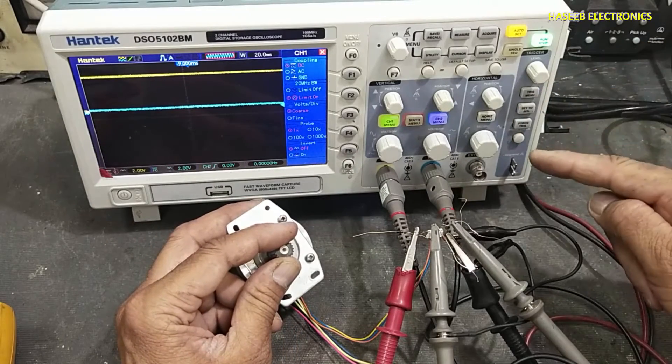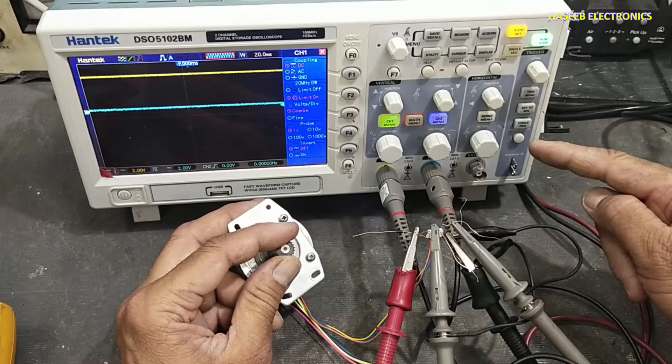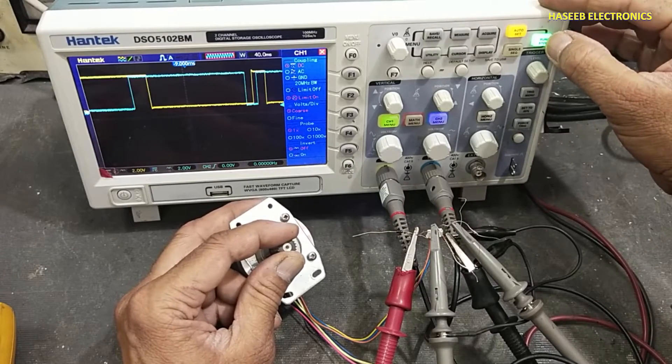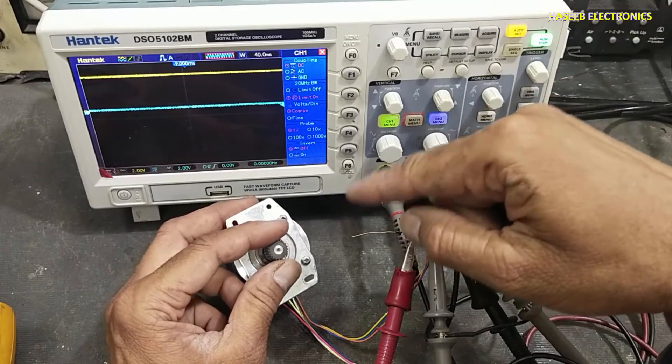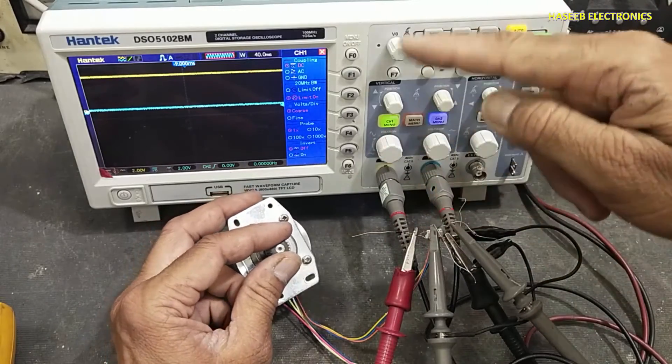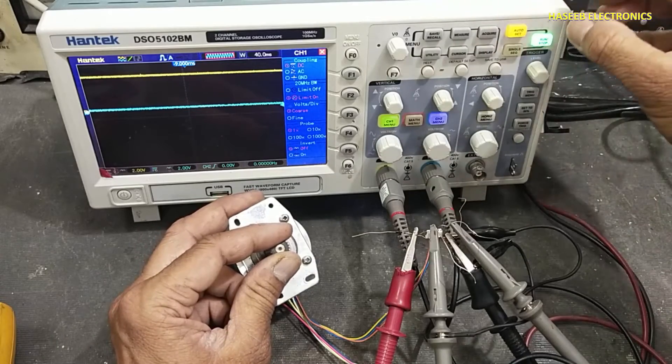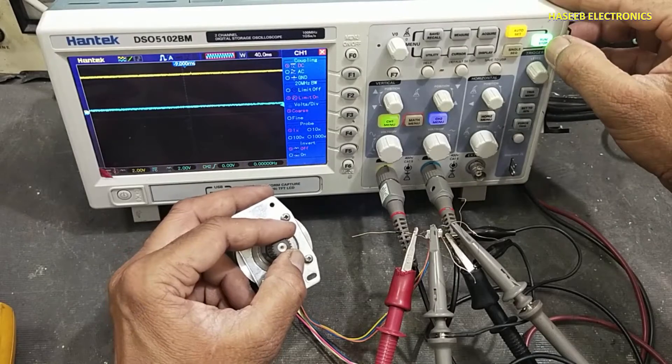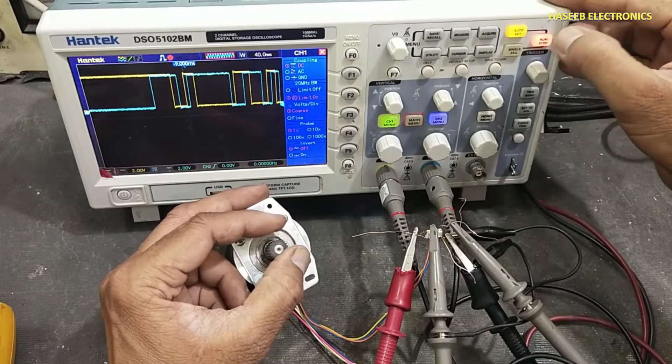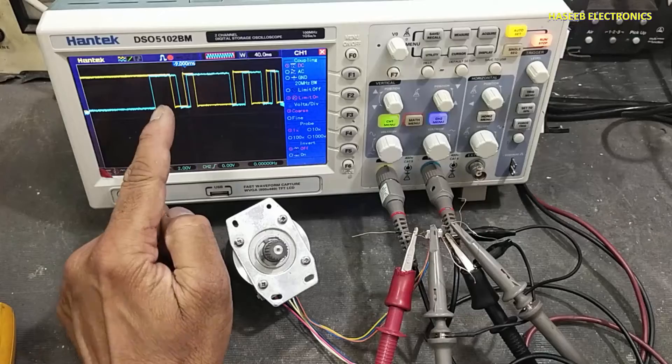I will decrease the time division. For initial signal capture, I will rotate it counterclockwise, and when the signal starts on the screen, I will stop it. Now I stop the signal.